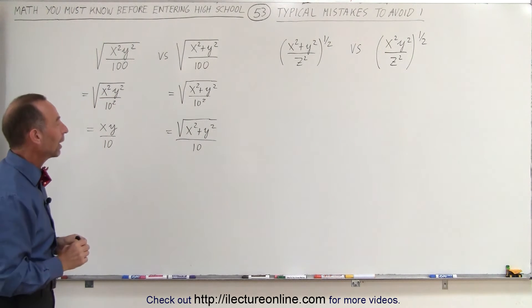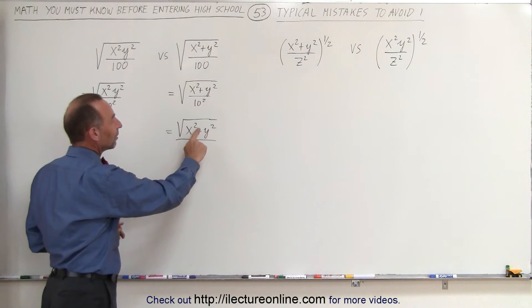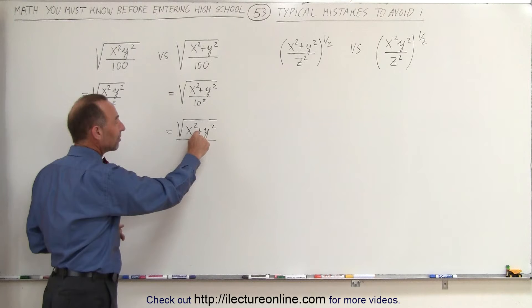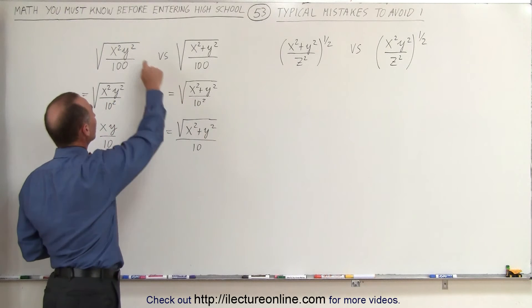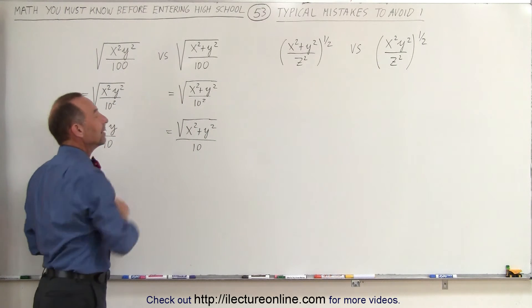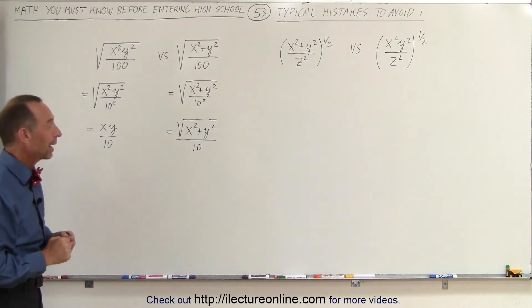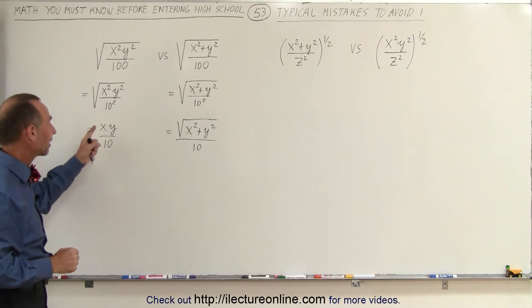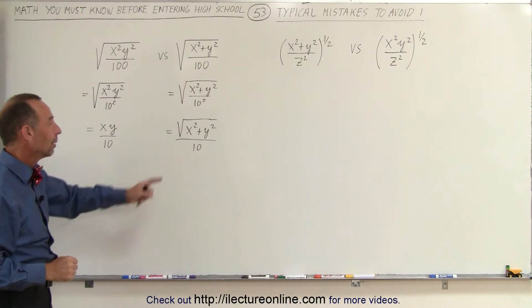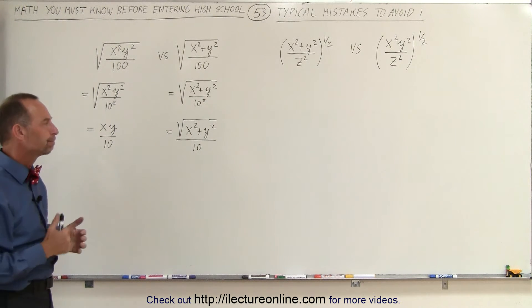This is the simplest you can write it. If the plus wasn't there and there was a multiplication sign, then it would look like this — and then you can indeed take out the x squared and the y squared from the radical and write it as x times y. But if it's like this with the plus sign, it cannot be done.